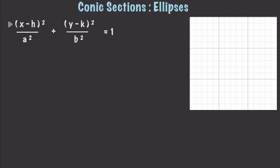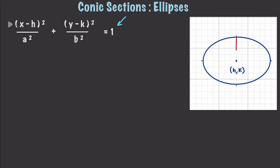An ellipse is the set of points in a plane whose distances from two fixed points called foci have a sum that equals a constant. The standard form of an ellipse is what you see right here. We have a central point and four additional points represented by a and b values. The central point is represented by h and k, b represents the vertical distance, and a represents the horizontal distance.